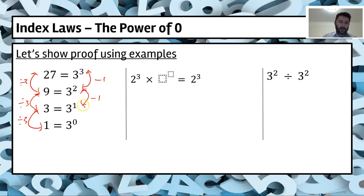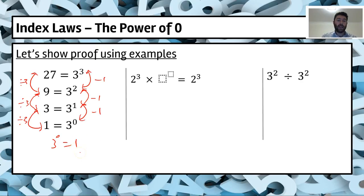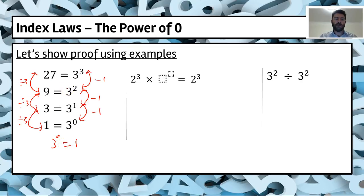Continuing the pattern, to get from three to one we divide by three again, and the index goes down by one to reach zero. So three to the power of zero equals one according to that pattern. We could keep going to look at negative indices, but that's another video.